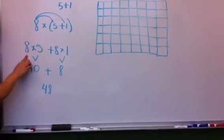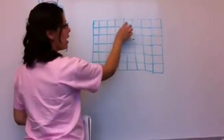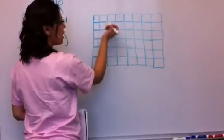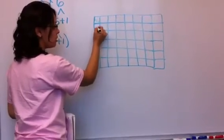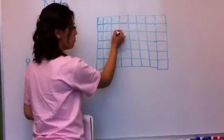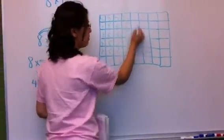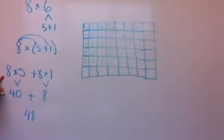I will do 8 columns with 5 in each row using the green marker. So I have 8 columns, and I'm going to color 5 in each column: 1, 2, 3, 4, 5, all the way down. And that shows this first part.